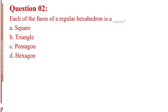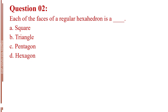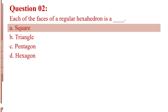Question number 2. Each of the faces of a regular hexahedron is a blank. Letter A, square. Letter B, triangle. Letter C, pentagon. Letter D, hexagon. The answer is Letter A, square.